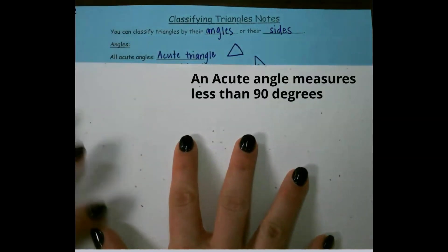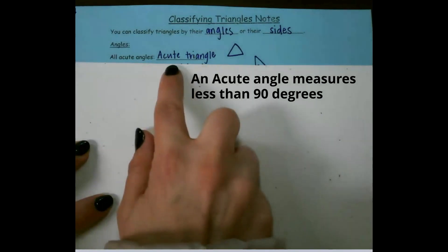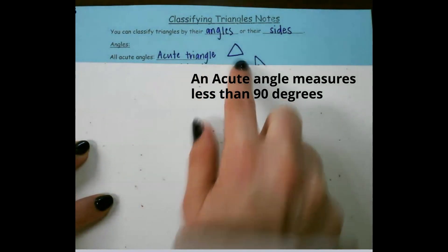Looking at their angles, if it has all acute angles, it would be an acute triangle and looks something like this.